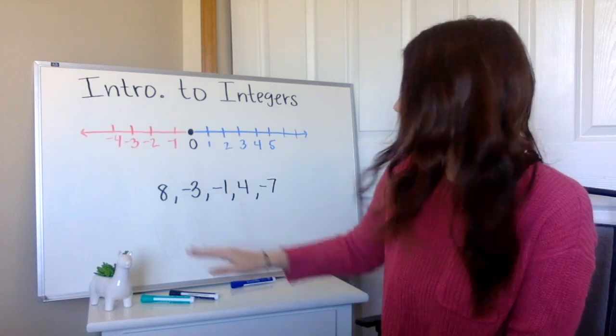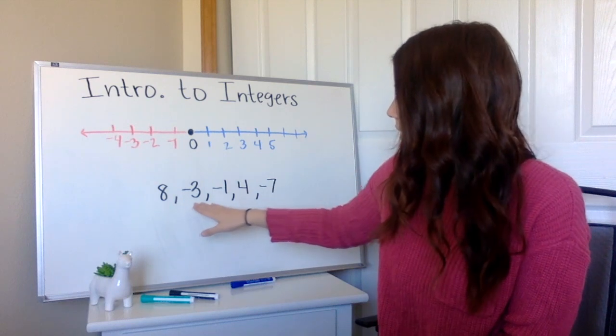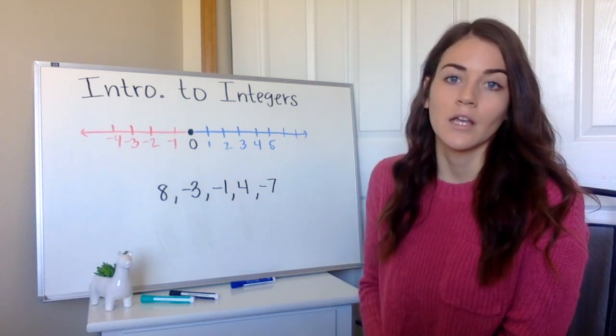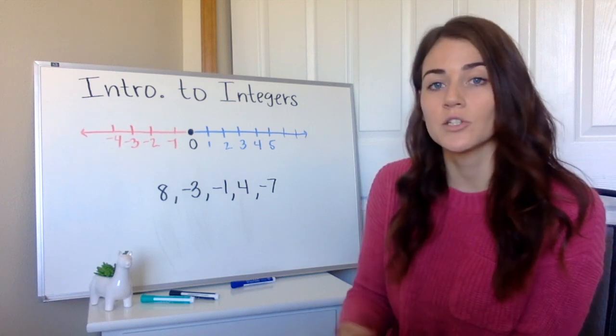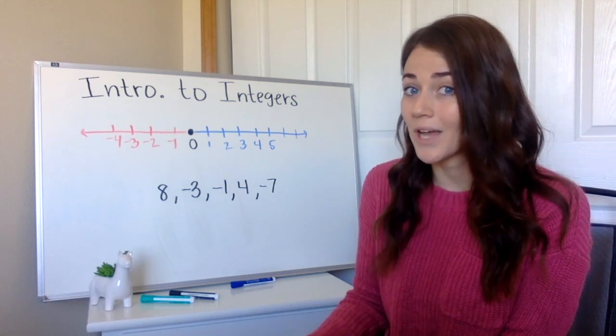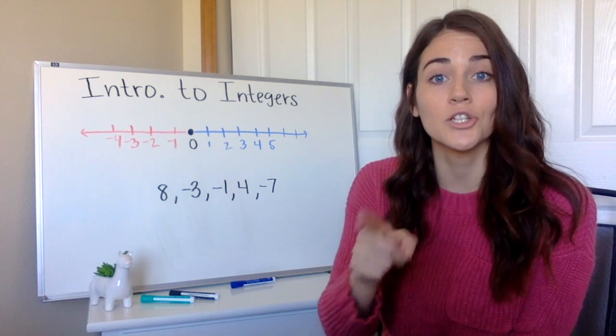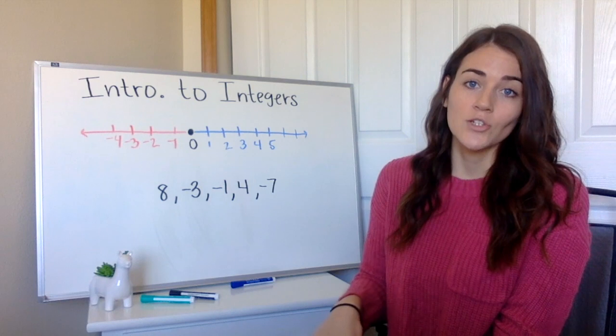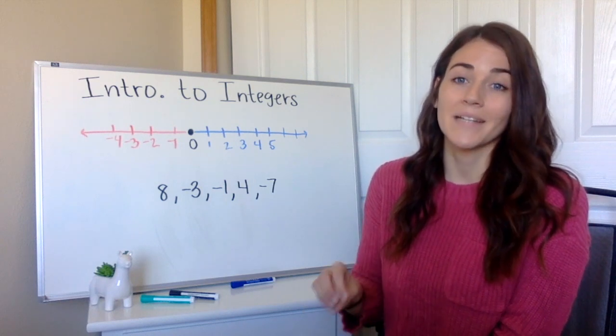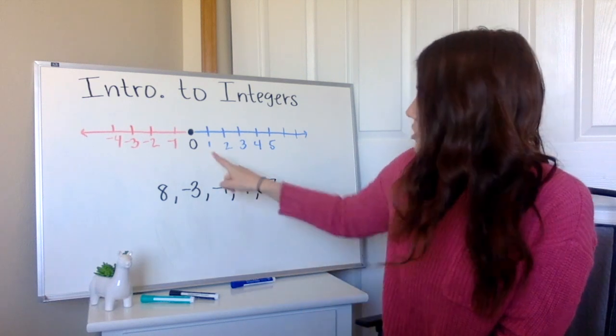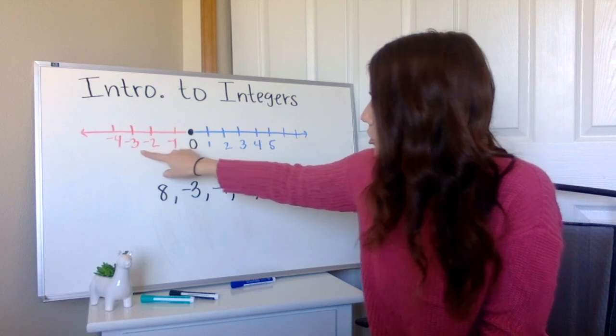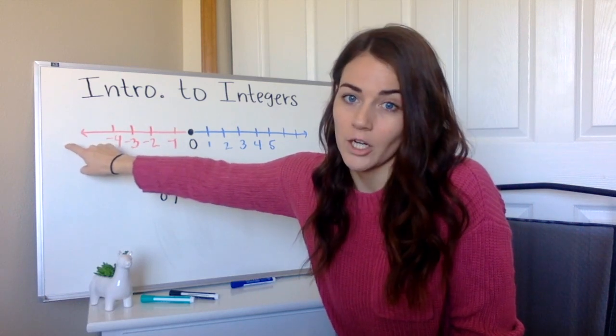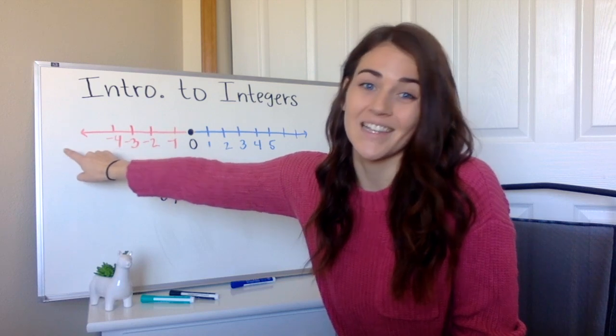So this time I have five numbers, a positive eight, negative three, negative one, four, and negative seven. If I'm wanting to order least to greatest, which sometimes they will ask greatest to least, so make sure you read those directions. But this case, I'm doing least to greatest. So I want to find my smallest number, which as you can see, as we're getting smaller and smaller, I'm getting bigger numbers. But they're smaller because they are negative.